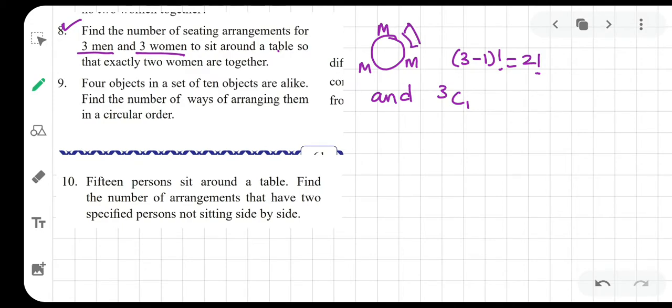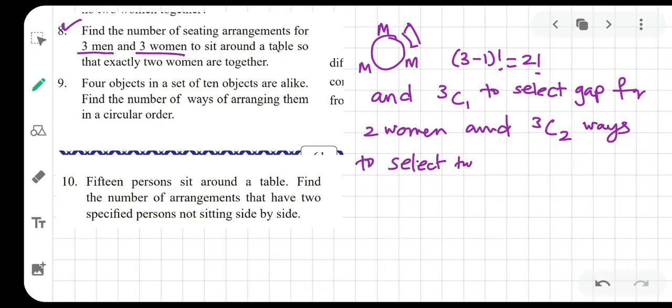So first, a gap is selected, let's say this one, where I'll put two women, right? And 3C1 to select gap for two women. Now I need to decide which two women, because three women are available. So two women can be selected in 3C2 ways to select two women, and then arrange them in 2 factorial ways. So actually 3C2 into 2 factorial is 3P2.